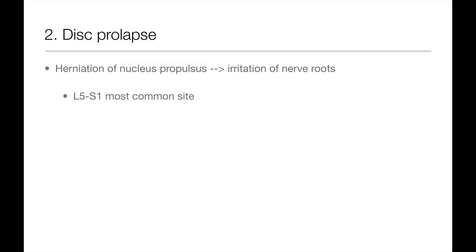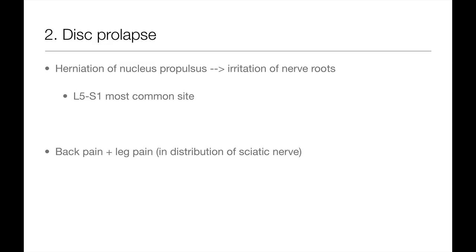If there's a tear in the annulus of the intervertebral disc, it may lead to herniation of the nucleus pulposus. Patients normally give a history of leaning forwards, hearing a popping sound in their back and developing back pain shortly afterwards. The usual disc involved is the one that lies between L5 to S1. Depending on the severity of the herniation, there's a small chance that the patient may develop spinal cord compression or cauda equina syndrome, so it's important to ask about the relevant red flag symptoms to rule out these conditions.